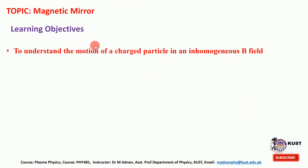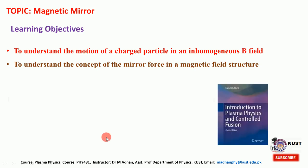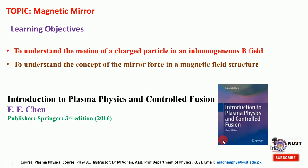First I will give the learning objectives. At the end of this lecture the student will understand the motion of charged particles in an inhomogeneous magnetic field and will be able to understand the concept of mirror force in a magnetic field structure. In this course we are following the book Introduction to Plasma Physics and Controlled Fusion by F.F. Chen, third edition, and some illustrations in this lecture are taken from this book.